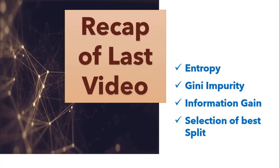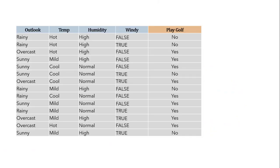Here I am using a very famous dataset as you can see on the screen. We have 5 columns in which outlook, temperature, humidity, and windy are categorized as input features, whereas play golf is categorized as output. We have different weather conditions and we have to predict whether one should go outside to play golf or not. Let's see how we will proceed with such a problem.